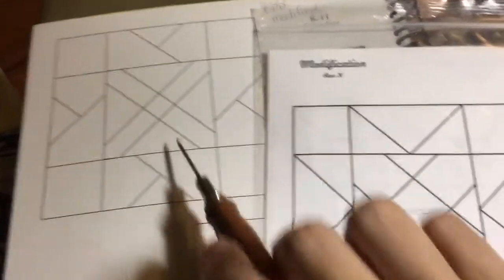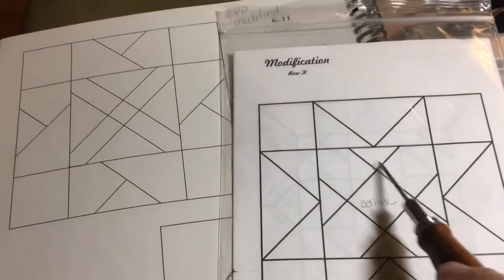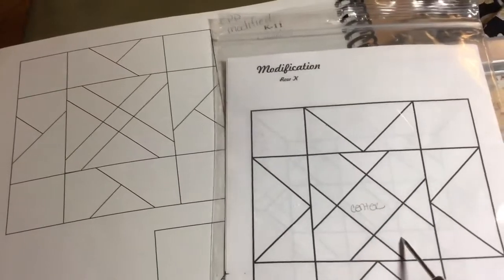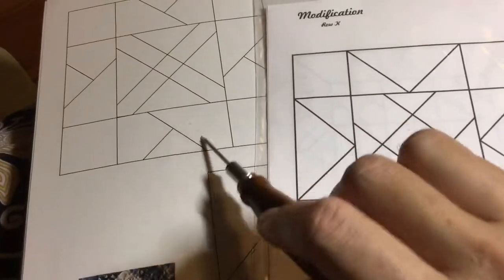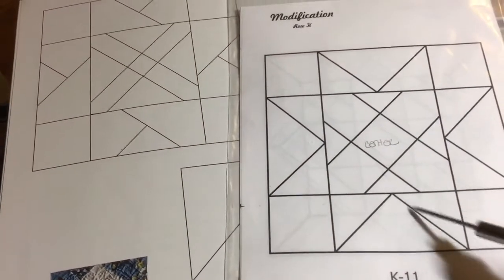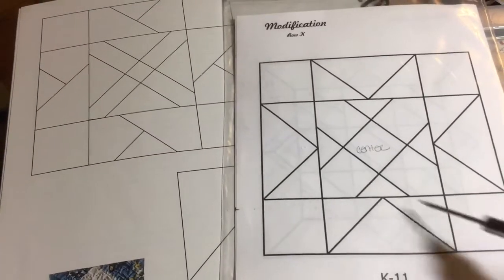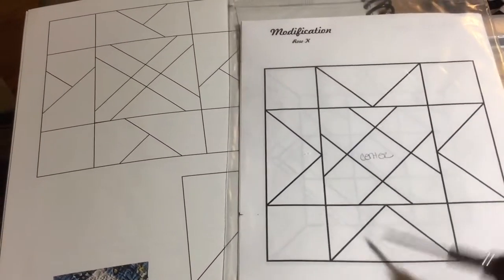We're going to expand the center section so that we have some bigger pieces in the center and then this isn't overlapped, it's more of an Ohio Star configuration where these three pieces make a flying geese.